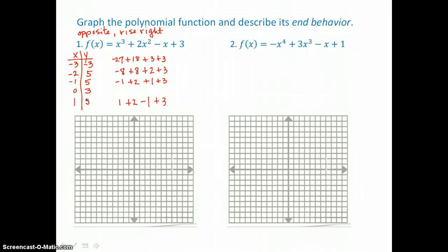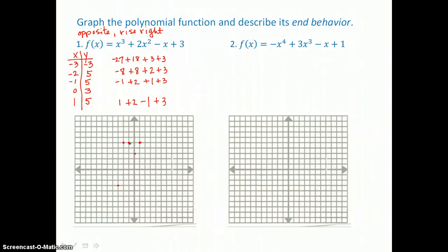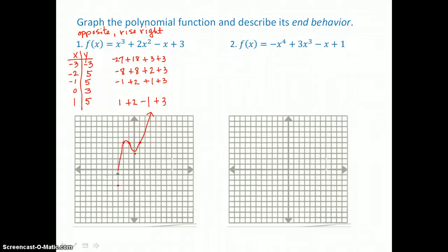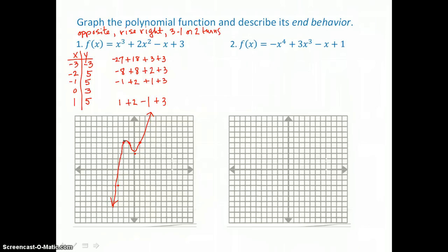So I'll graph (−3, −3) in the third quadrant, (−2, 5), (−1, 5), (0, 3), and (1, 5). This curve is going to rise to the right and fall to the left because it has opposite behavior left and right. Because it's third degree, it's going to have n minus 1, or 3 minus 1, two turns at the most — and that's exactly what it has. It rises from the left, turns once, turns twice, and then continues to rise to the right.